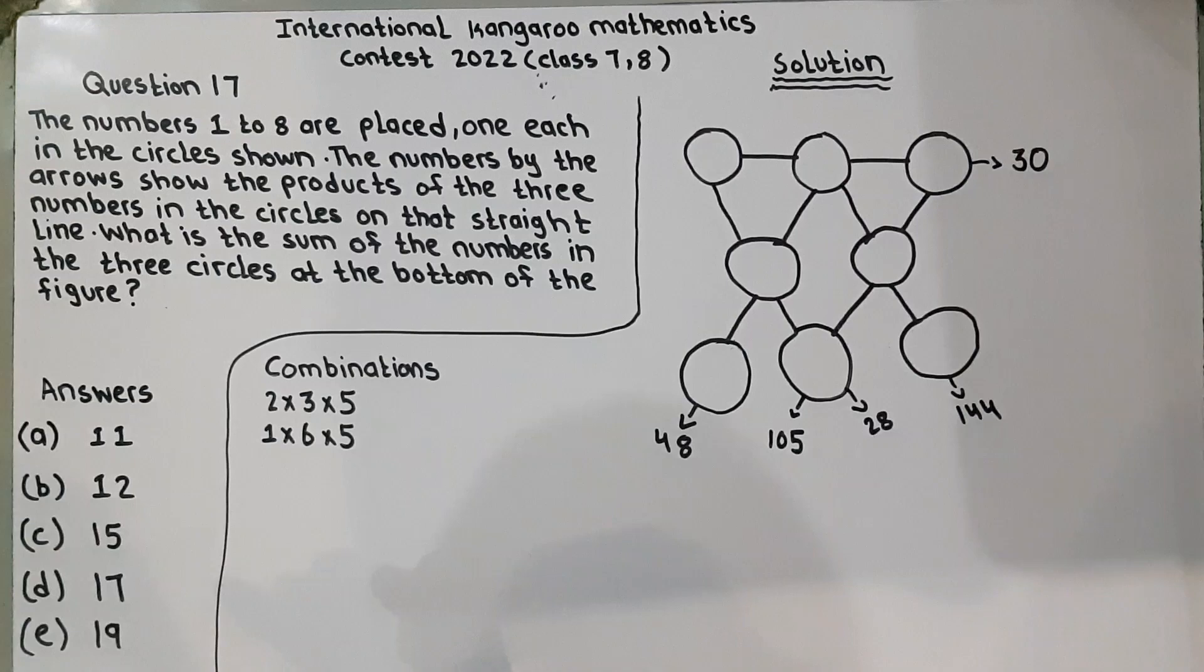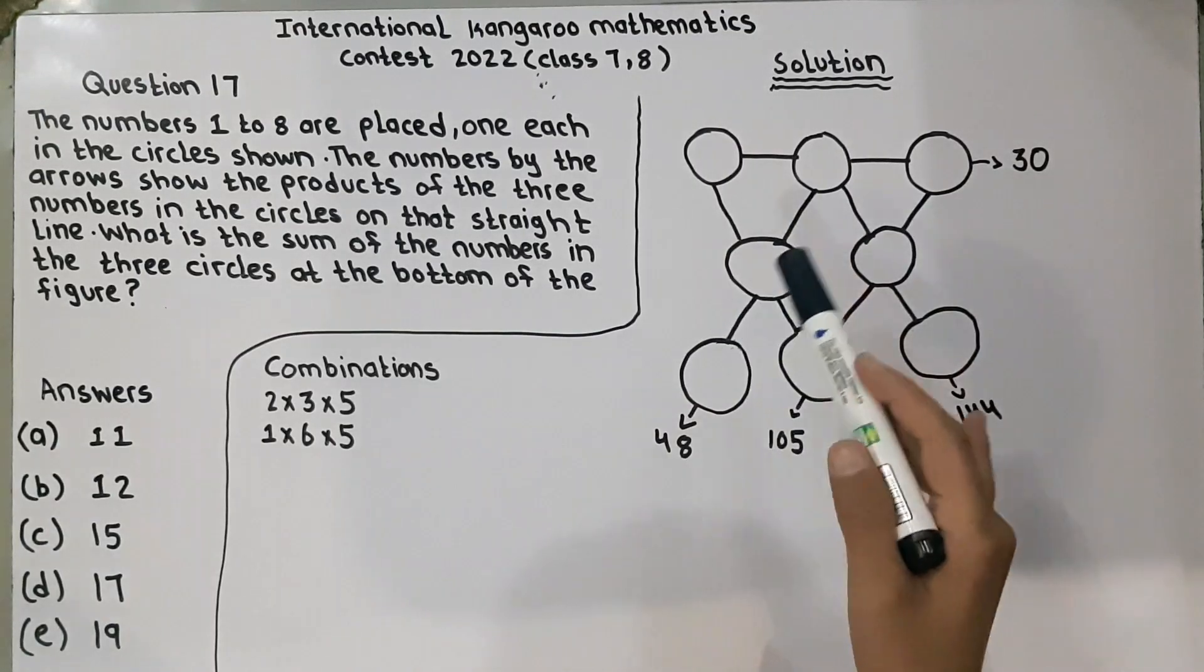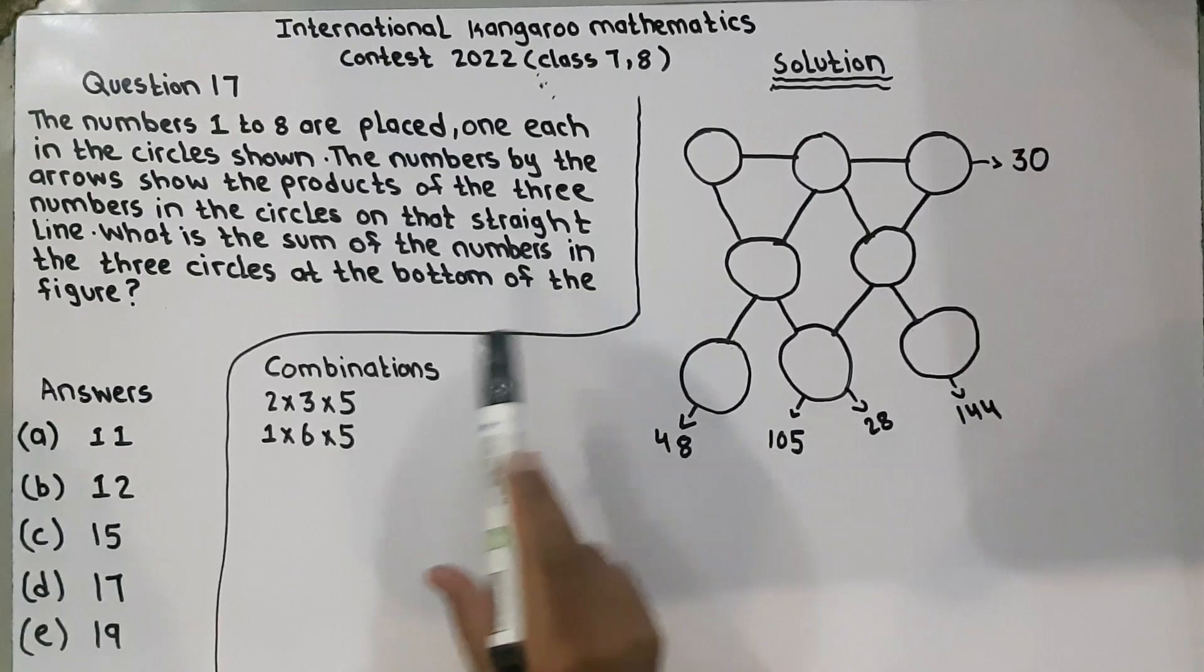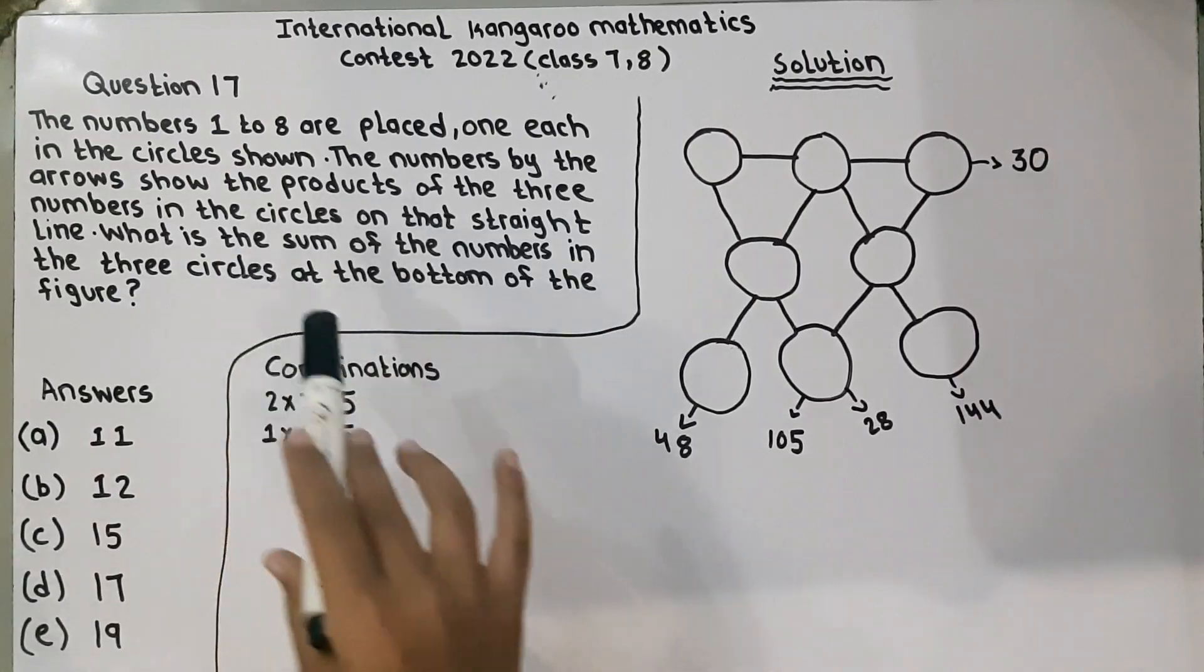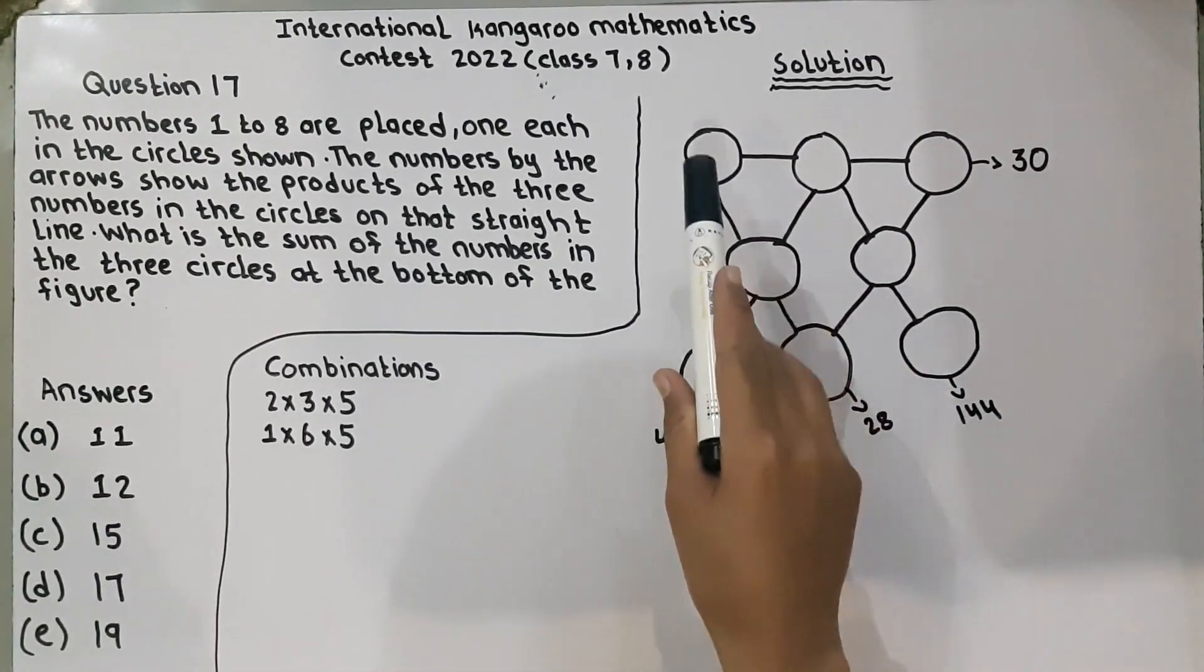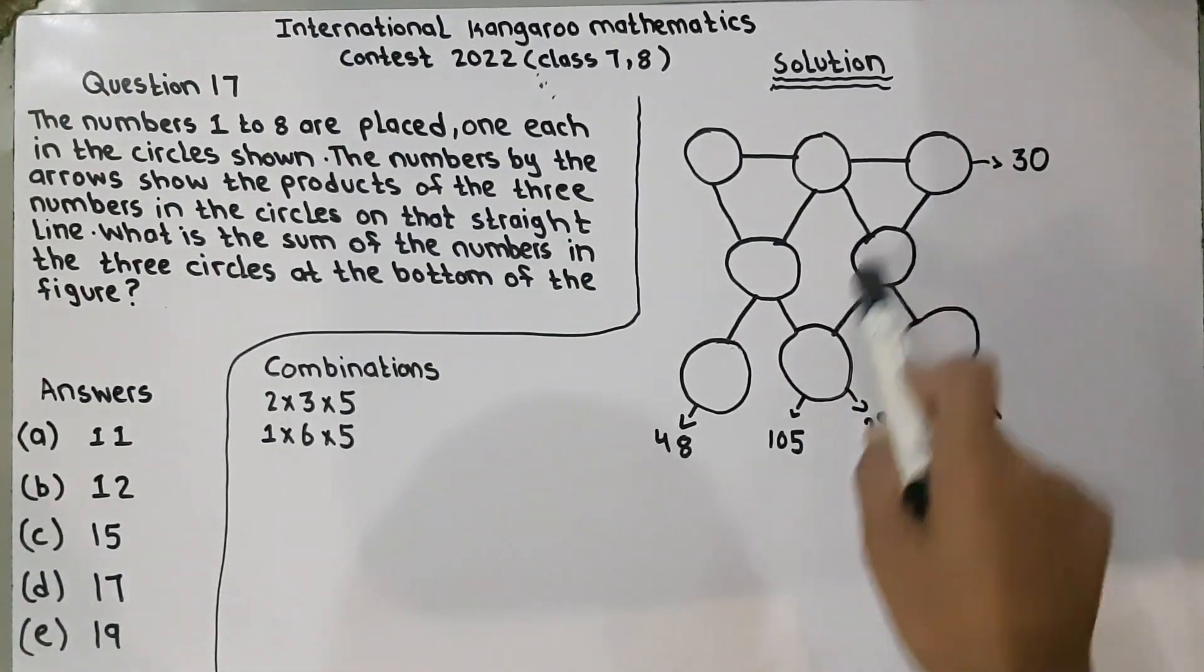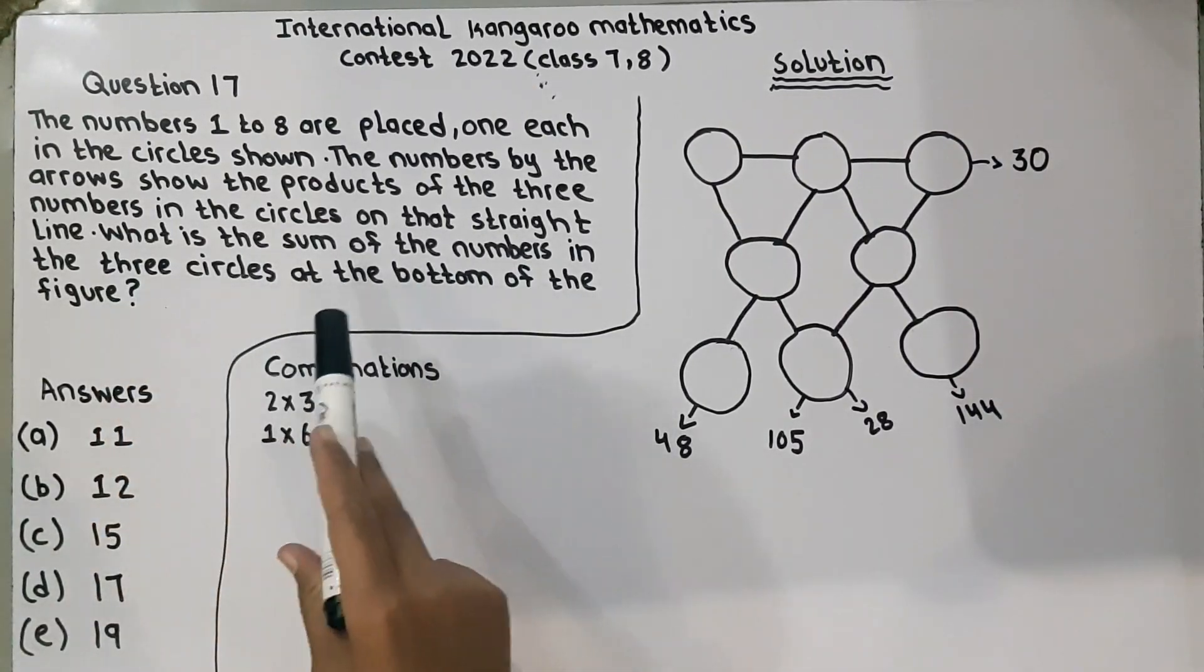He is saying that the numbers 1 to 8 are placed. This means these are 8 circles and he has placed numbers 1 till 8. These numbers are placed in the circles. The numbers by the arrows show the products of the 3 numbers. If we multiply then the answer is 30, and 3 numbers we multiply like this down is 28. 3 numbers we multiply like this, answer is 105. Of the 3 numbers in the circle on the straight line.